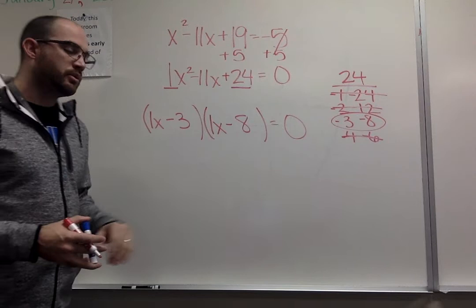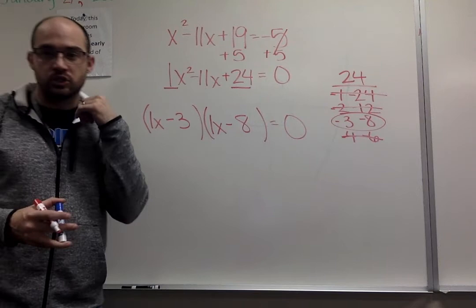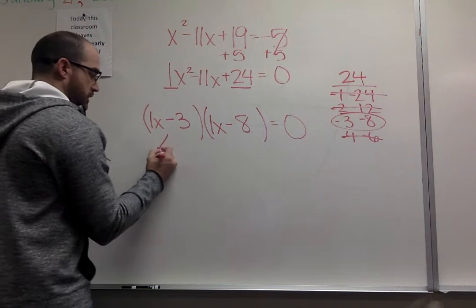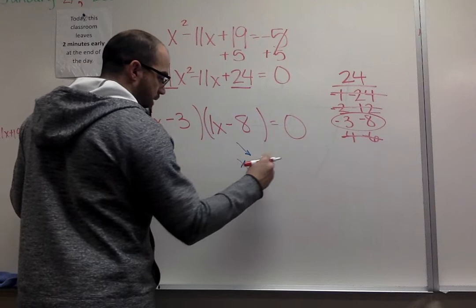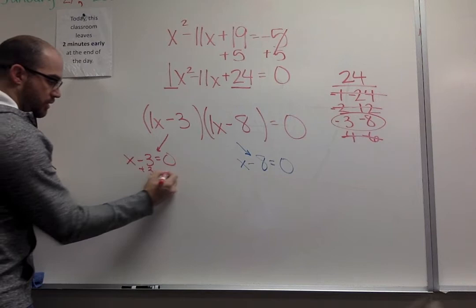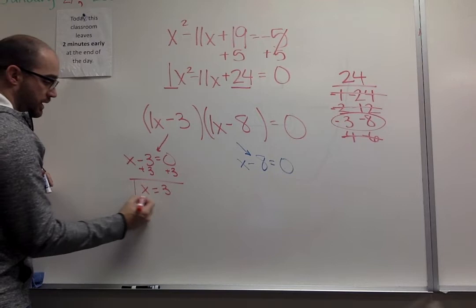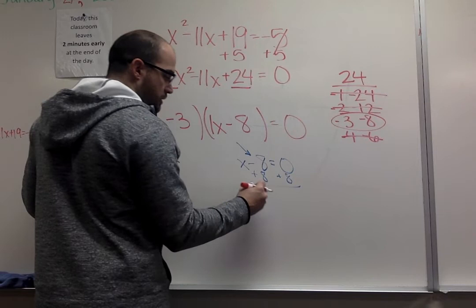Now this is exactly what I was just showing you on that first problem. This is where we're going to be splitting up our problem and solving. I would split this over here, split this over here, set up my two equations. 1x is the same as x, so I'm just going to write x minus 3 equals 0. Here I'm going to write x minus 8 equals 0. On the left side, I would add 3, and I have x equals 3. Right side, I would have plus 8 to both sides, so you get x equals 8.